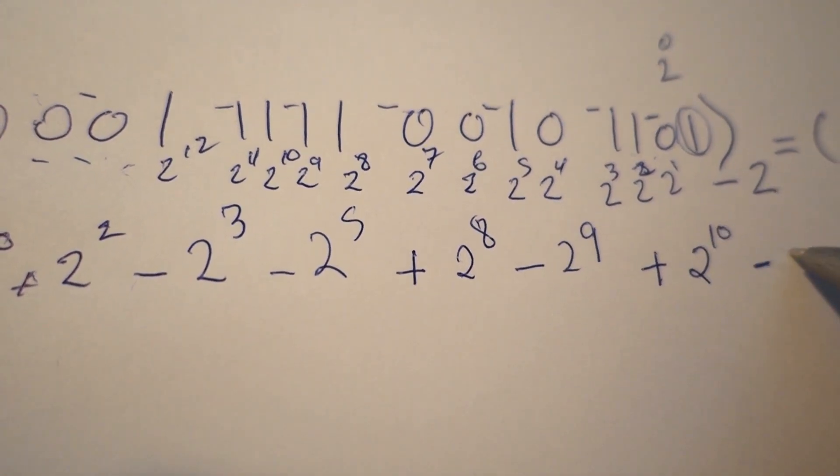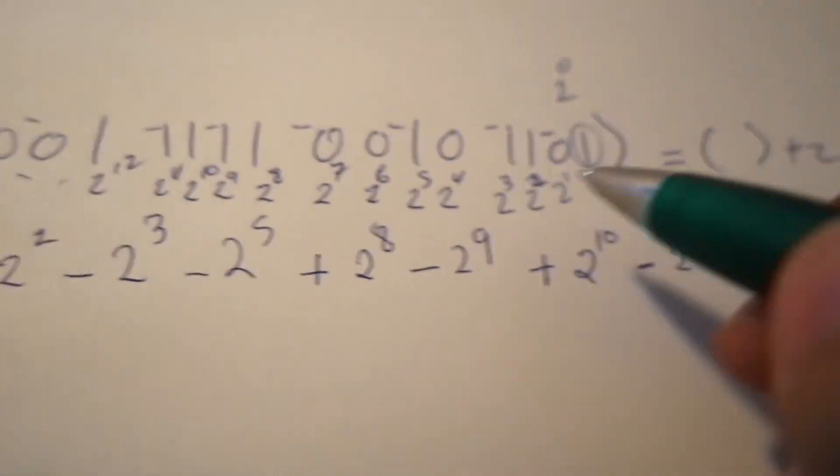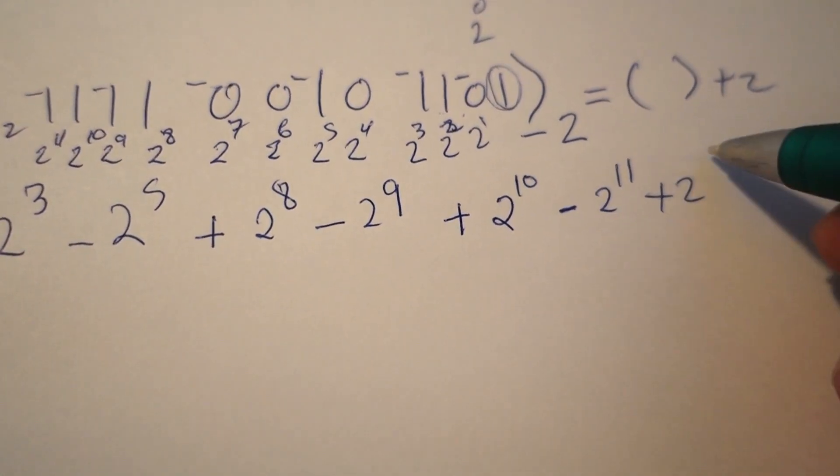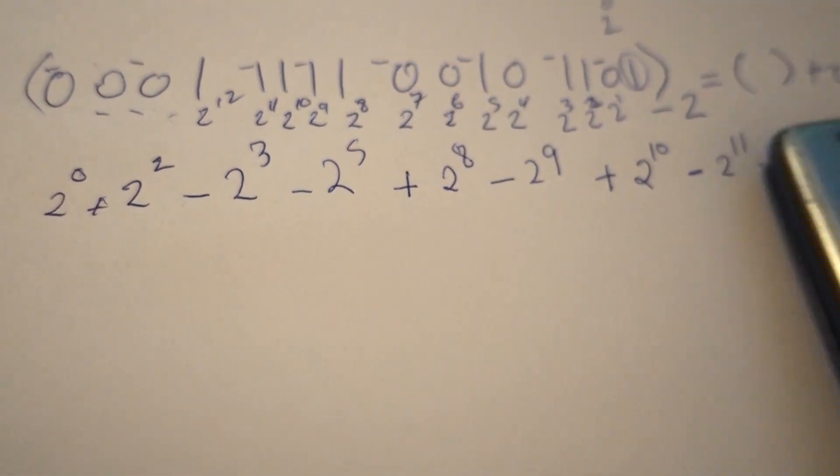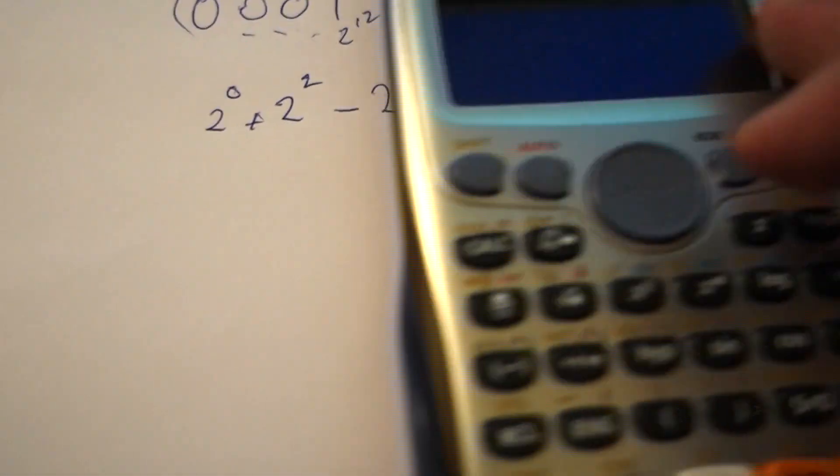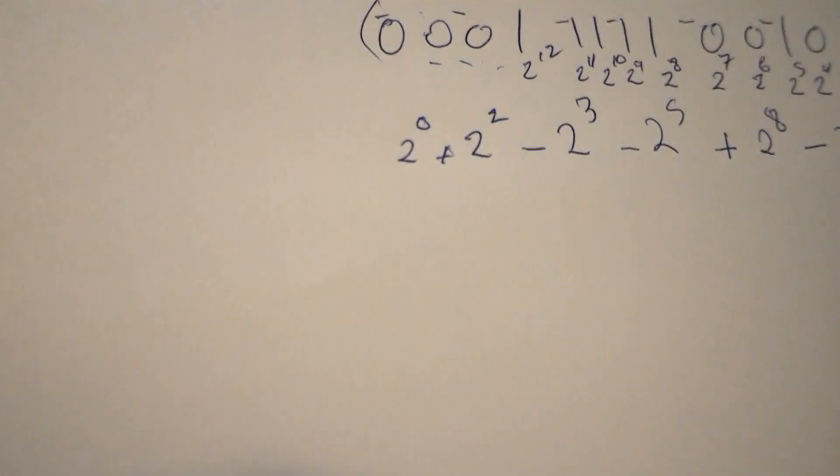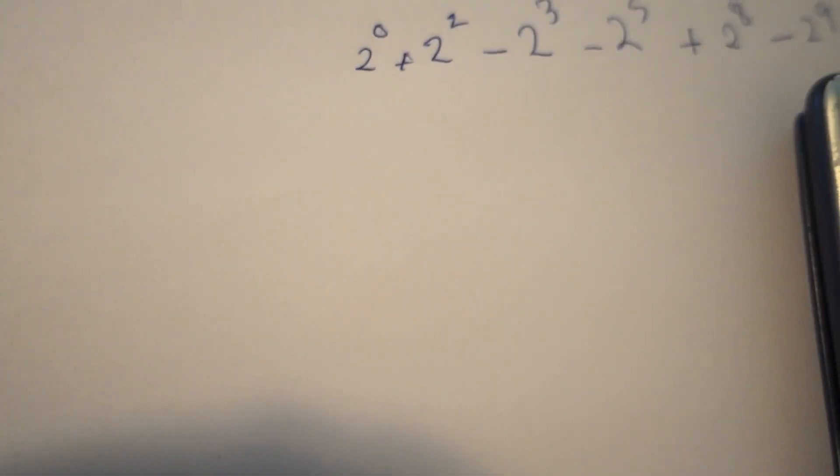We subtract 2^11, then add 2^12. I'm not going to be able to add all these values by paper, so I'm going to use my calculator. When I added all the values...